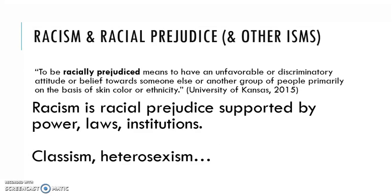Racism is discrimination based on race or ethnicity that is supported by power, institutions, and laws. It's important to emphasize that racism is the exercise of discriminatory power by people who have power over the group being discriminated against. In social work we also deal with the effects of discrimination based on class, sexuality, and other areas that become isms — institutionalized practices of discrimination based on those factors.